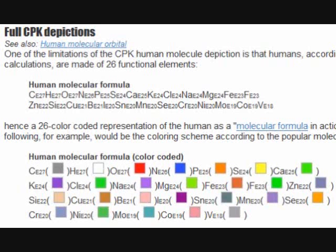Modern, fully rigorous CPK depictions of a human as a human molecule would need to take into account the fact that, according to mass composition tables, a human is a 26-element molecule comprised of 26 functional elements. Subsequently, modern artistic depictions of a human would need to use a 26 color-coded representation of the human as a molecular formula in action, in the prophetic 1919 words of American physician George Carey.